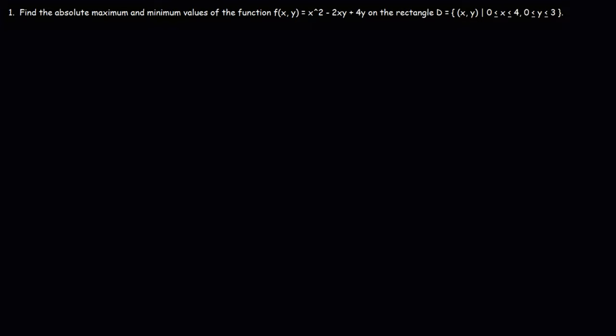In this video, we're going to talk about how to find the absolute maximum and minimum values of a multivariable function. So we're given a function f(x, y) on a rectangle D. How can we find the absolute extreme values? The first thing we need to do is determine the partial derivative with respect to x and with respect to y.